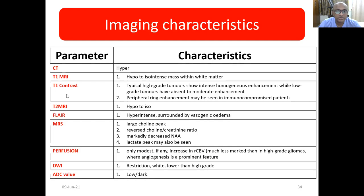On imaging characteristics, on CT it is hyperintense. On T1 it is iso to hyperintense. High grade tumors show intense homogeneous enhancement, while low grade tumors have absent to moderate enhancement. Peripheral ring enhancement is seen in immunocompromised patients. On T2/FLAIR it is hyper to iso intense, and on FLAIR the lesion will be hyperintense surrounded by vasogenic edema.